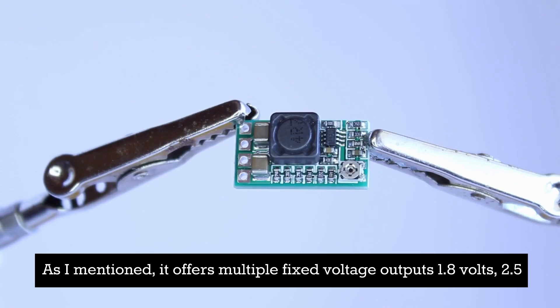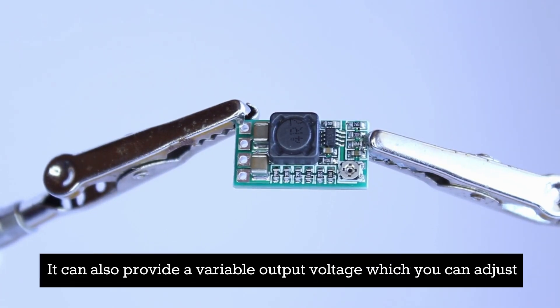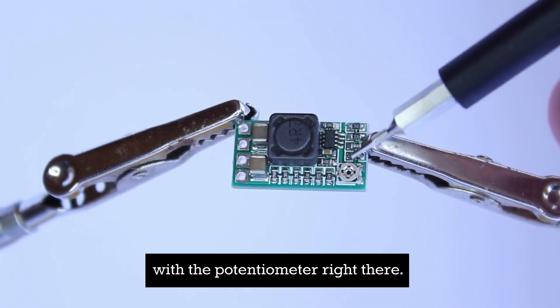As I mentioned, it offers multiple fixed voltage outputs: 1.8 volts, 2.5 volts, 3.3 volts, 5 volts, 9 volts, and 12 volts DC. It can also provide a variable output voltage which you can adjust with the potentiometer right there.